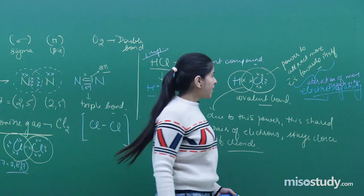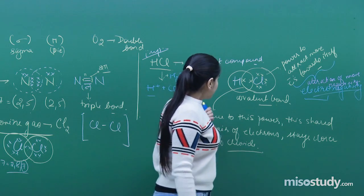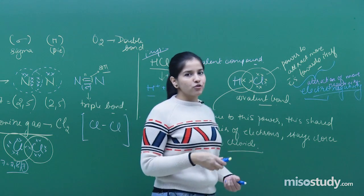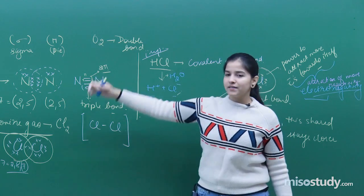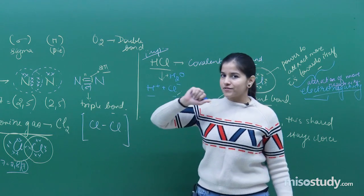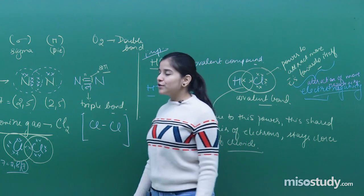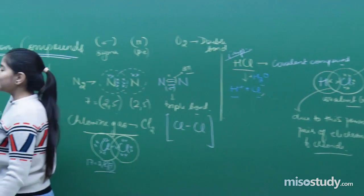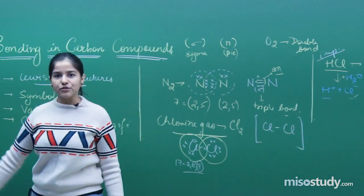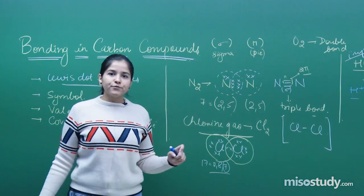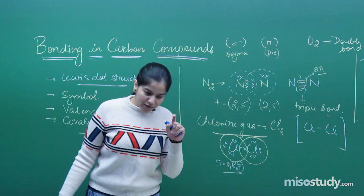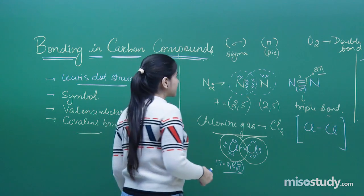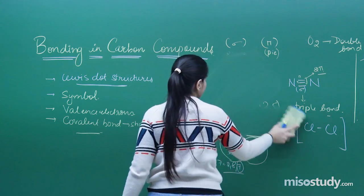So that was one more example of Lewis dot structures. Now let us take up Lewis dot structures for carbon compounds. There is one very important property of carbon known as catenation.